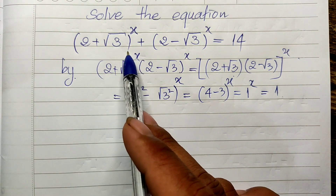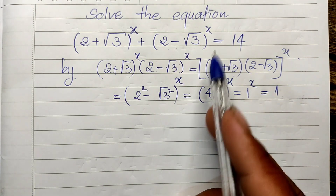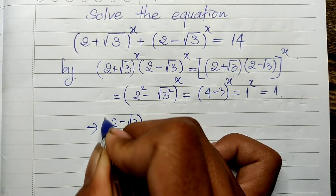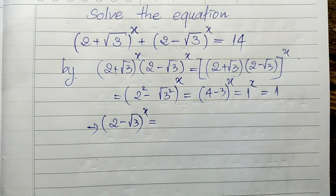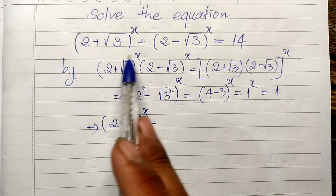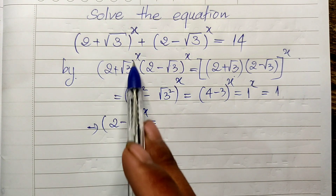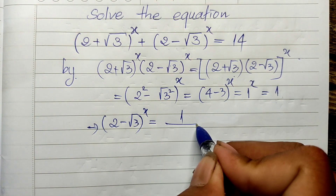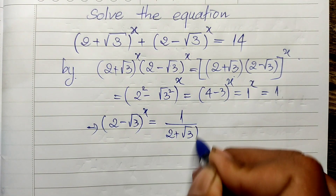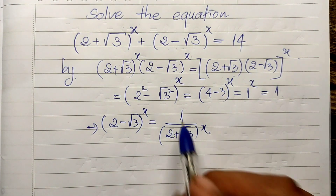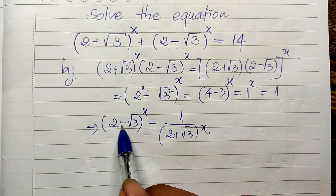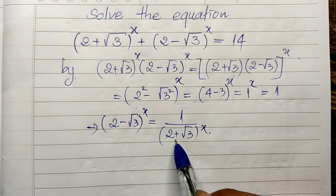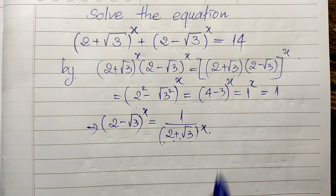Since the two parts multiply to 1, we can find one part from the other. We get (2 minus square root of 3) to the power 8 is equal to 1 divided by (2 plus square root of 3) to the power 8. So substituting back, we have (2 plus square root of 3) to the power 8 plus 1 divided by (2 plus square root of 3) to the power 8.